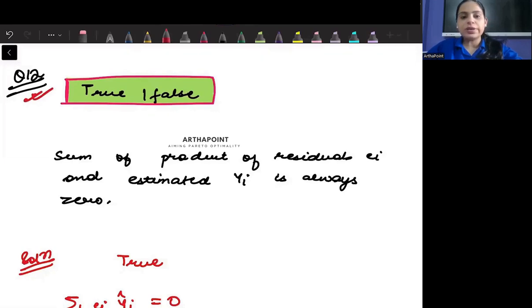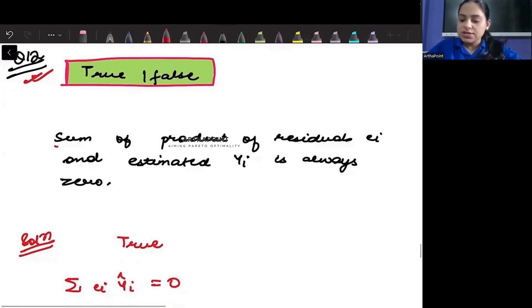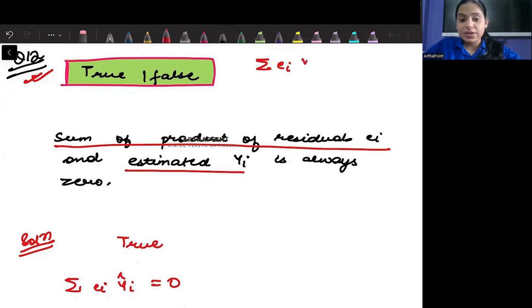Look into the statement. You need to tell whether it's true or false. The sum of product of residuals - that means summation ei and estimated Yi. Estimated Yi means predicted Yi, that means Yi hat, is always zero.